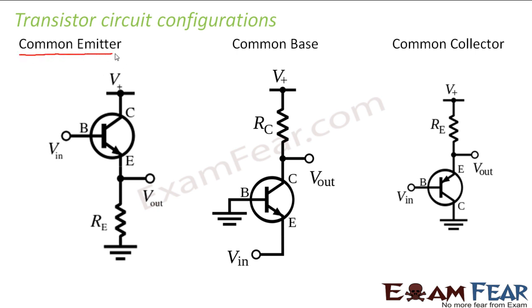So what are those three configurations? One is called common emitter configuration, one is common base configuration, and the third one is common collector configuration.